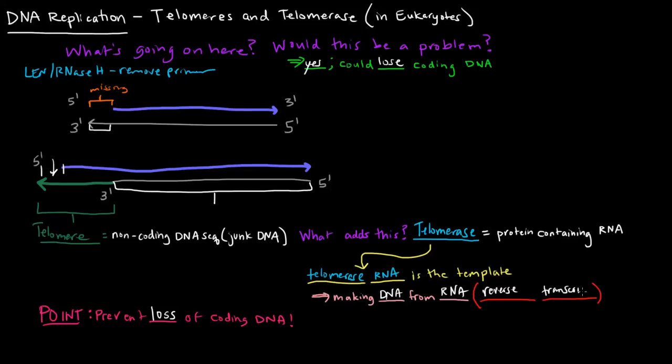Transcription is the process in which we take DNA and go to RNA. But now we're making DNA from RNA, so we're going backwards. This is reverse transcription, an exception to the rule of the central dogma.